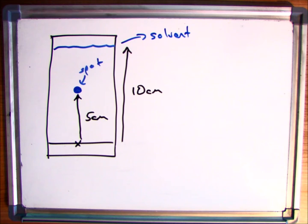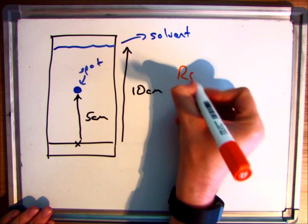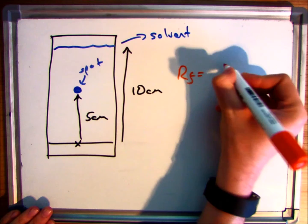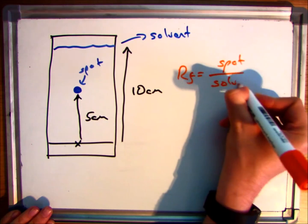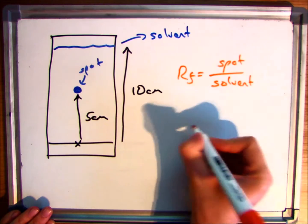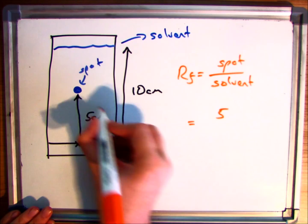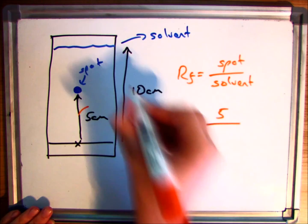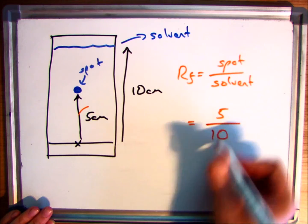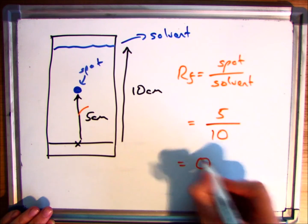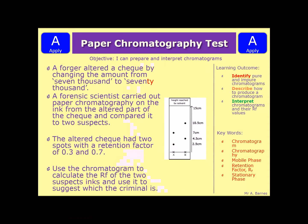Let's have a look at the example. So here we've got a chromatogram — you might be given the distances, or you might need to use a ruler. It's spot divided by solvent, so 5 is the distance the spot has moved and 10 is the distance of the solvent front. 5 divided by 10 is 0.5.